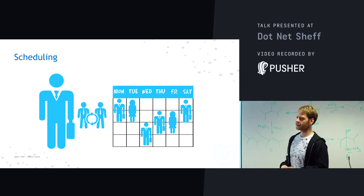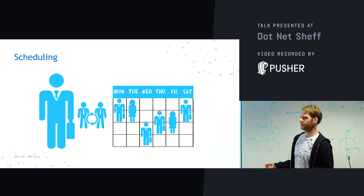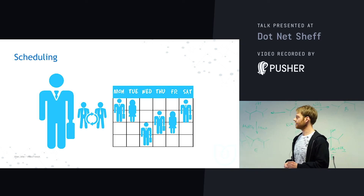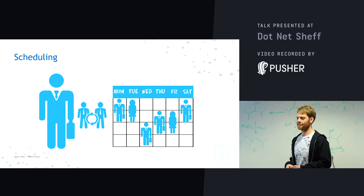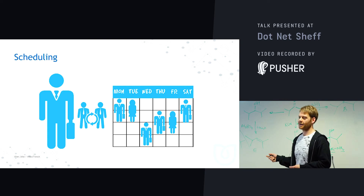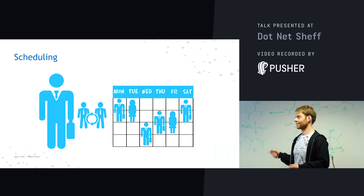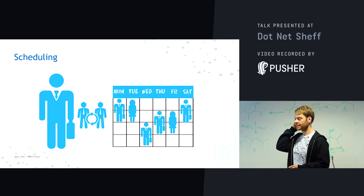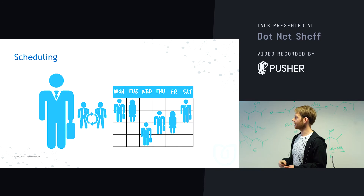Scheduling comes out of the box and is built on top of Quartz.NET. We can say every Monday at 9pm, send this given message. It puts that message onto another queue managed by Quartz.NET, which puts it on its schedule and fires that message back onto another system to be processed at the given time.